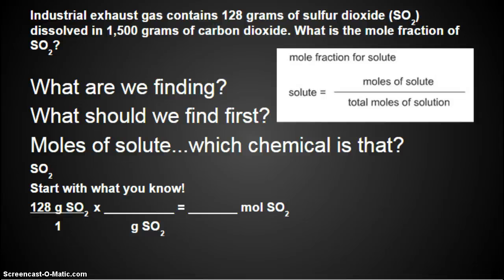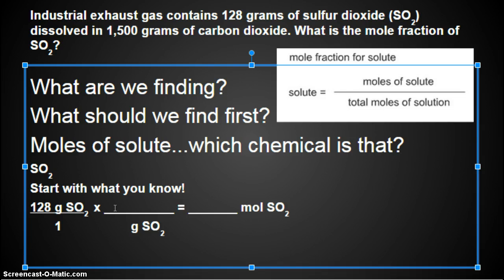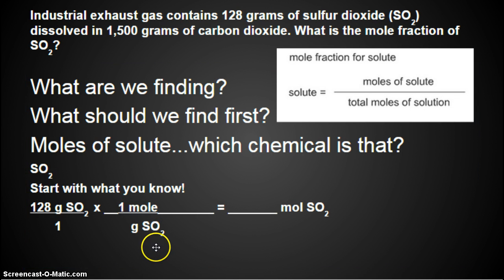And what will the final unit be? What are we trying to convert grams into? We're trying to convert it into moles of SO2. And how do we convert grams into moles? Well, we know that the top of this is going to be one mole. So in one mole, I need to know how many grams of SO2 there are. So look at your periodic table, hit pause, and try and do that part by yourself.